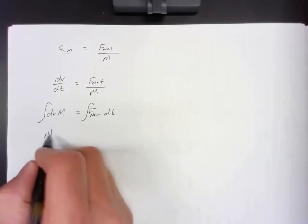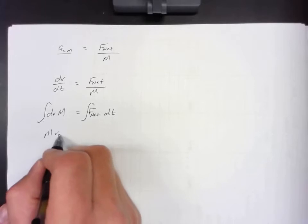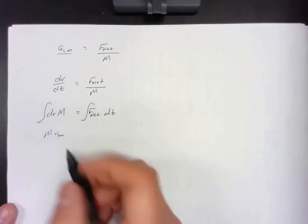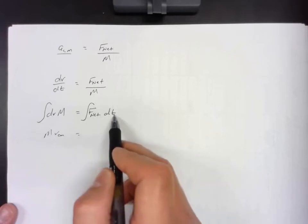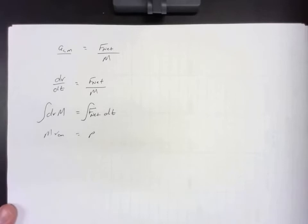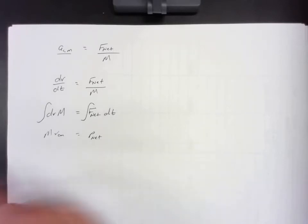Well, this just becomes m times v, and would actually be the center of mass, because dv turns into v. Well, the integral force times time is momentum. And it's the net momentum, since it's the net force.